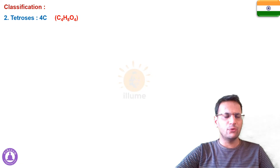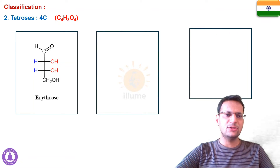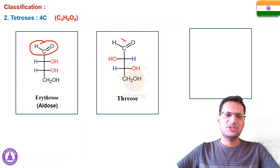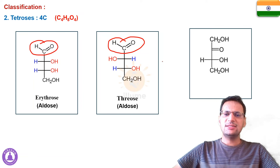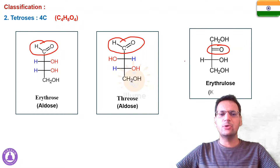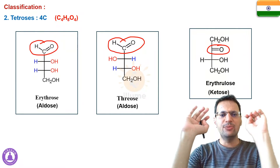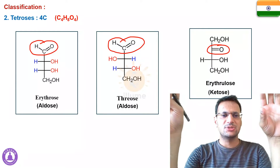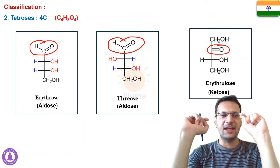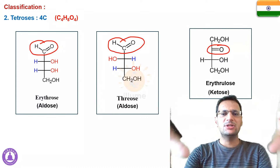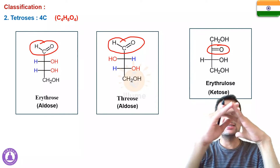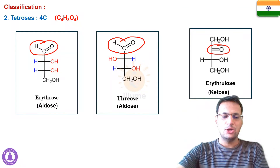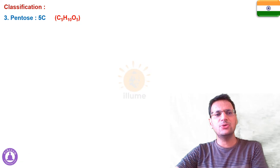Tetroses are four-carbon monosaccharides with the formula C₄H₈O₄. Examples include erythrose (aldehyde group → aldose), threose (aldehyde group → aldose), and erythrulose (keto group → ketose). All three — erythrose, threose, and erythrulose — share the same chemical formula C₄H₈O₄, making them isomers of each other. This is a special type of isomerism that will be discussed in the next video.